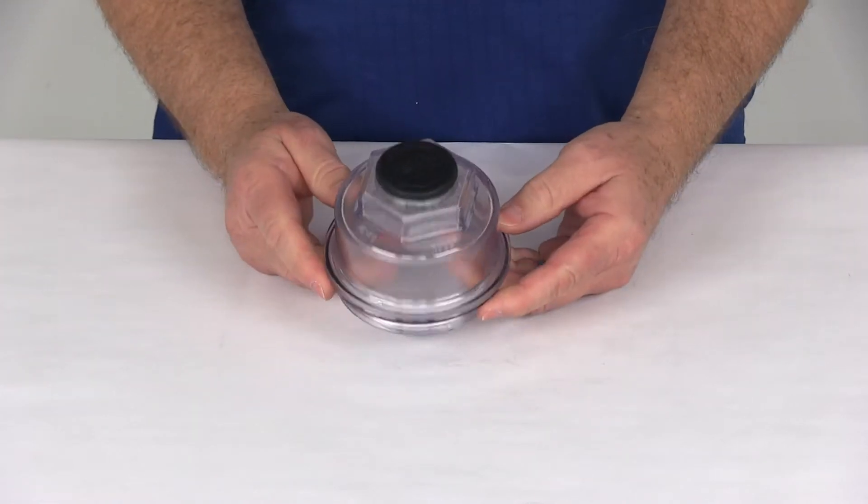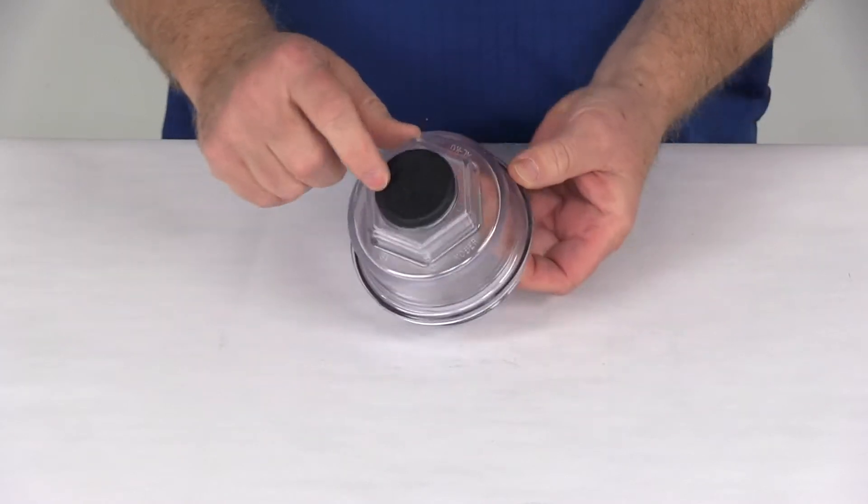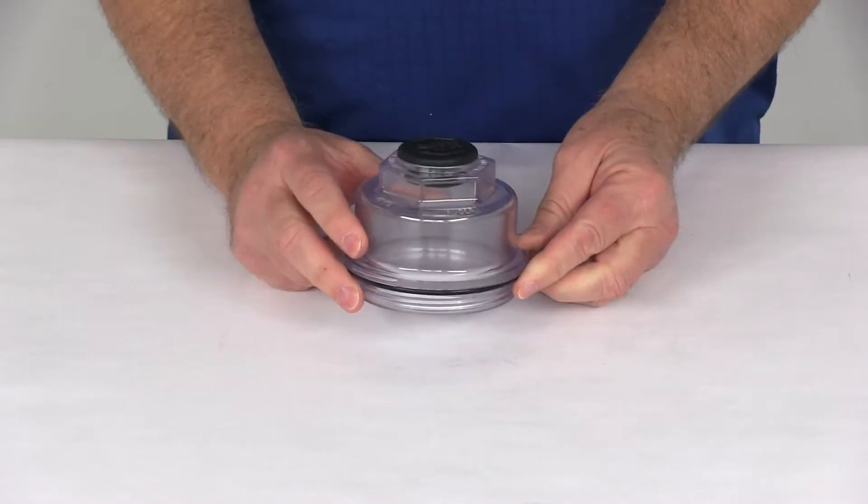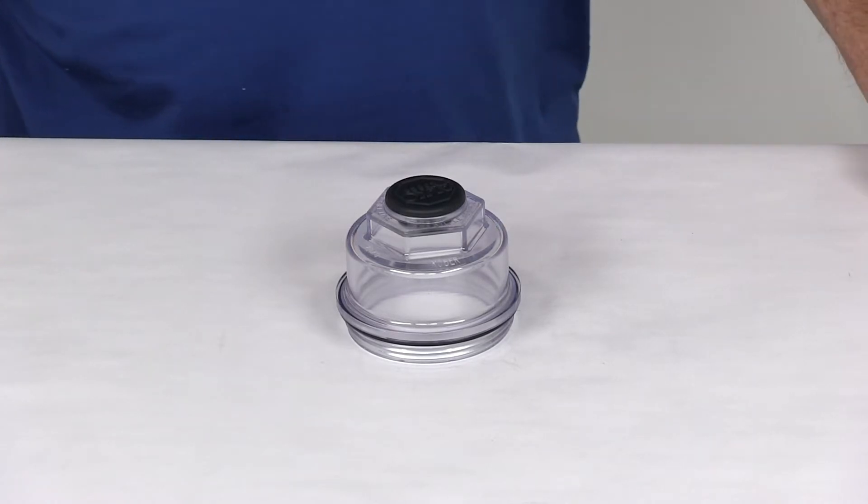This part does come with all the pieces shown here. It comes with the polycarbonate cap, the rubber o-ring, and the rubber plug. That should do it for the review on the oil cap kit for 10,000 and 12,000 pound axles.